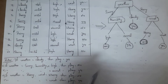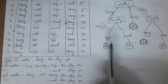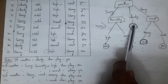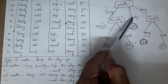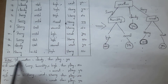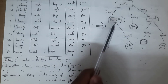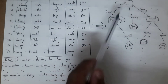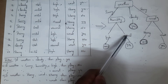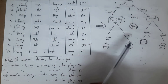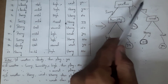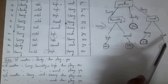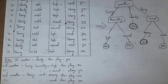Now I am creating decision rules based on this decision tree. There are five class labels, so I need to create five rules. Rule 1: if weather condition is cloudy, then play is yes. Rule 2: if weather condition is sunny and humidity is high, then play is no. Rule 3: if weather condition is sunny and humidity is normal, then play is yes. Rule 4: if weather condition is rainy and wind is strong, then play is no. Rule 5: if weather condition is rainy and wind is weak, then play is yes.